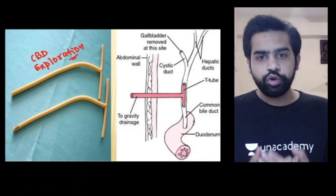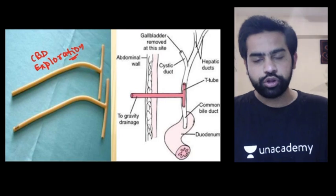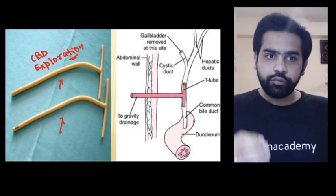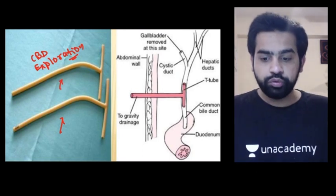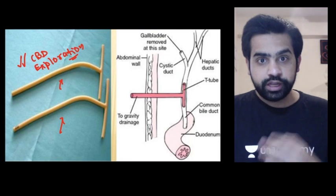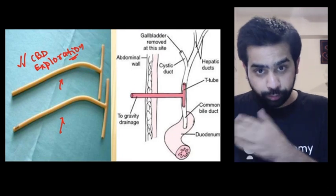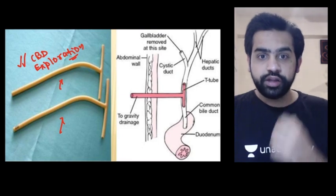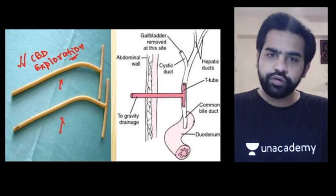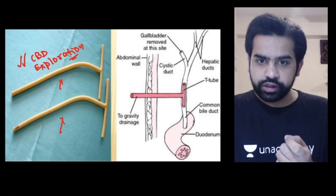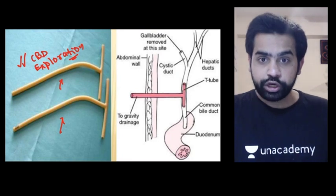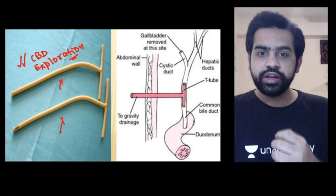Let us understand what a T-tube is. These silastic tubes are called T-tubes, used during CBD exploration. When you have a CBD stone, you explore the CBD, remove the stone, and close the CBD over these T-tubes. The main reason is to look for any retained stone — even after CBD exploration, some stones may have been missed.